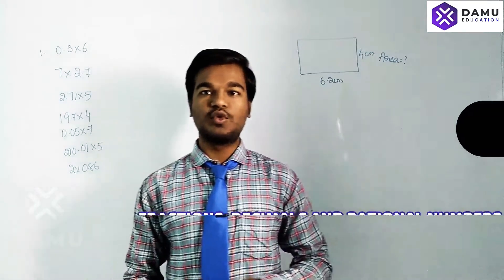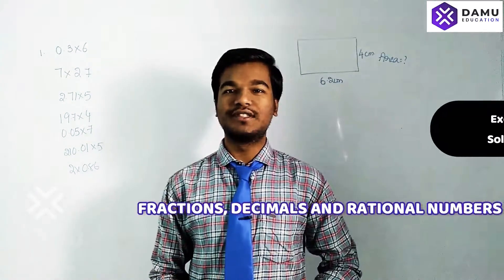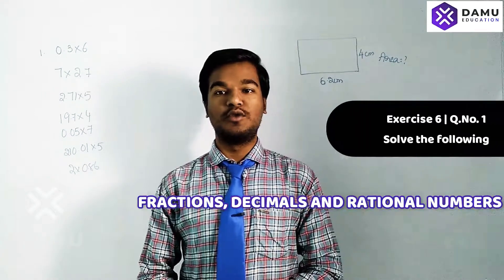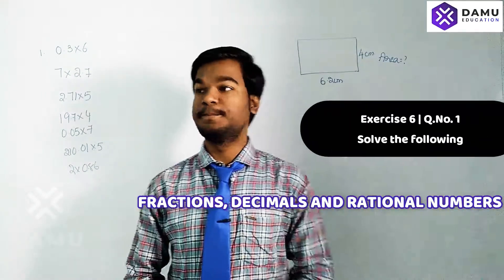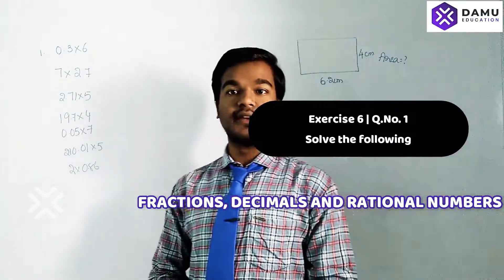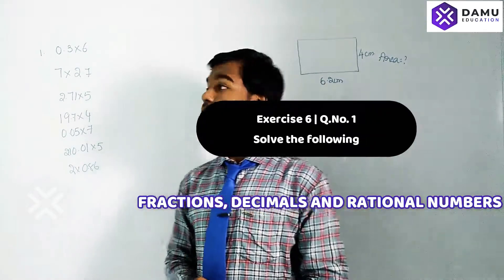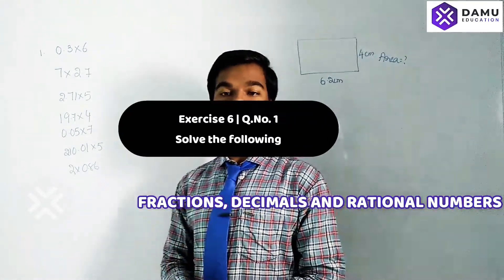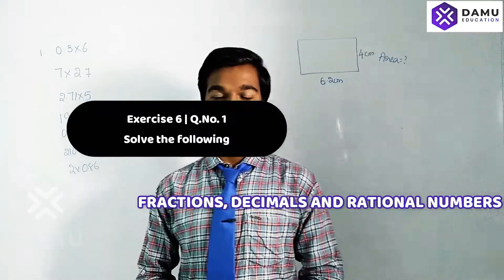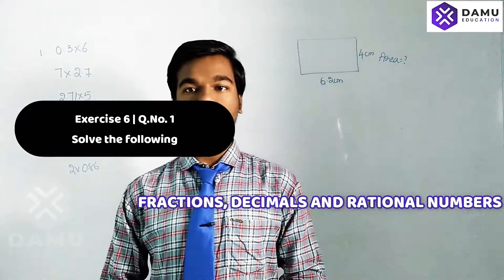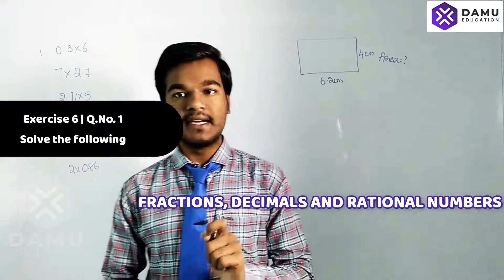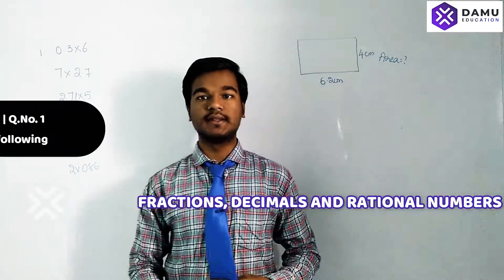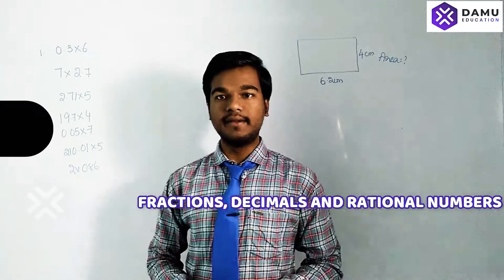Hello viewers, thanks for watching our videos. Please subscribe and click the bell icon, please support us to do more videos. Our first question is we need to solve 0.3 into 6 — decimal values multiplied with integers. How to solve this directly: we can multiply 0.3 into 6 normally. The first method is normal multiplication.